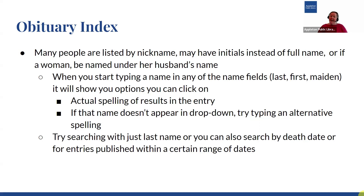These are actual spellings of results in the entries. So if a name doesn't appear in that drop-down menu, you can try typing an alternative spelling of that name. You can also try searching with just a last name, or search just by a death date to see all related entries on that date, or search for entries within a certain date range. If you're not sure exactly when they died, you can do a 7-day, 10-day, or full month window to see results for that time period.